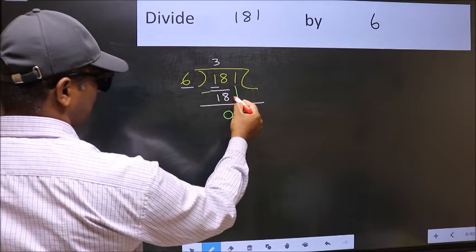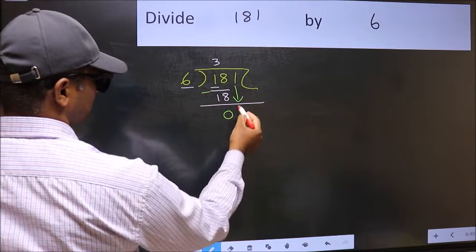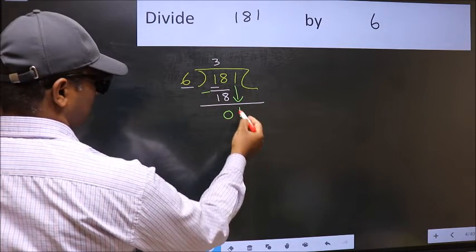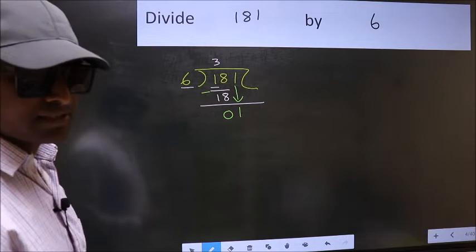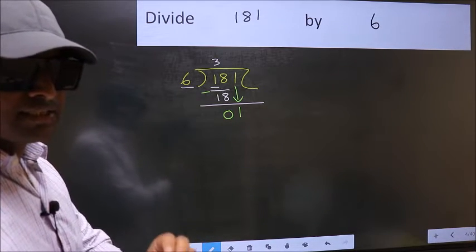After this, bring down the next number. So 1 down. After this step, the mistake happens. And the mistake is this.